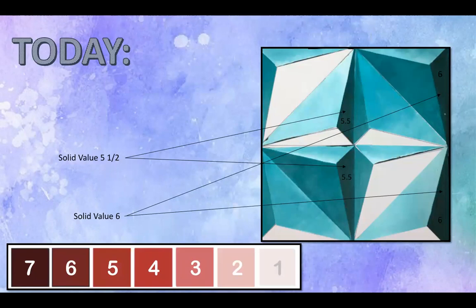We're going to be doing what I call value 5 1/2 and 6, and you're going to have four sections to paint today. Two of those sections are going to be a solid 6. They're going to be along this right hand edge, so that should be pretty easy for you to make.